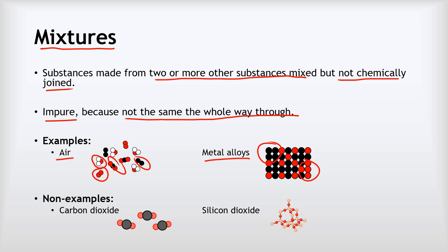Things that aren't mixtures, for example, carbon dioxide gas here, that's because we've got these individual molecules that are all the same as each other. Silicon dioxide, again, we've got this regular repeating pattern. We've got a fixed ratio, so it doesn't count as a mixture.